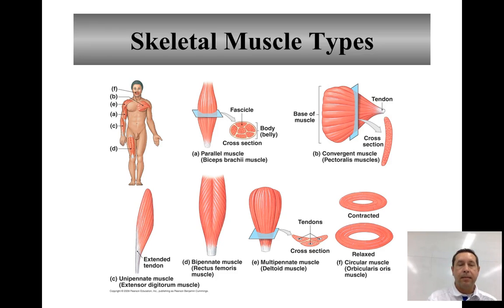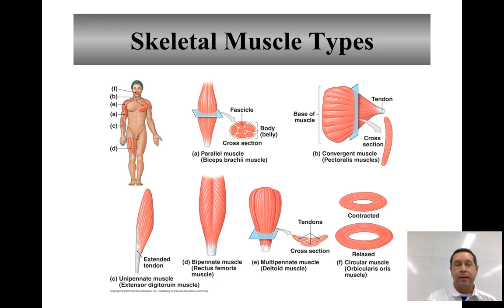In a unipennate muscle, the fascicles are all on one side of that tendon — they have a common angle, but they're all on one side of the tendon. The extensor digitorum muscle is an example. In a bipennate muscle, you have fascicles on both sides of that central tendon, again at a common angle. The rectus femoris muscle in the thigh is an example.